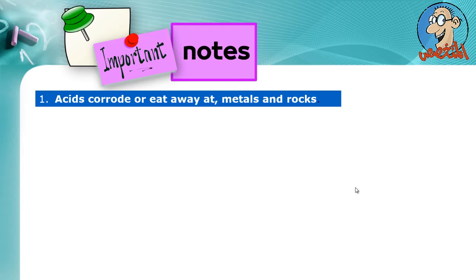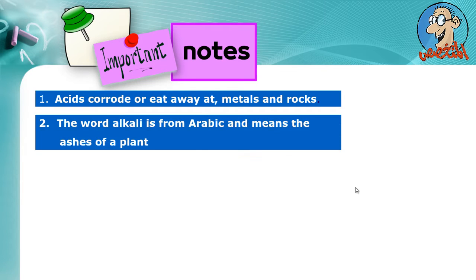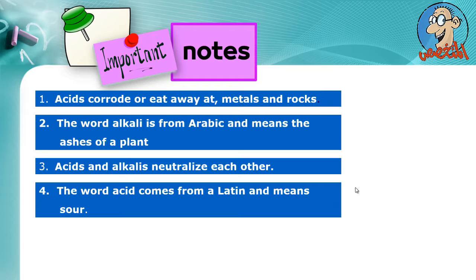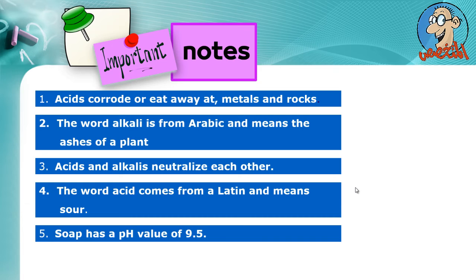Now, these are some important notes. Number 1: Acids corrode or eat away at metals and rocks. Number 2: The word alkali comes from Arabic and it means the ashes of a plant. Acids and alkalis neutralize each other. The word acid comes from Latin and it means sour.